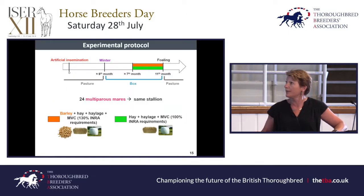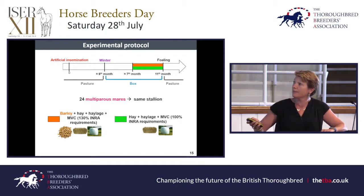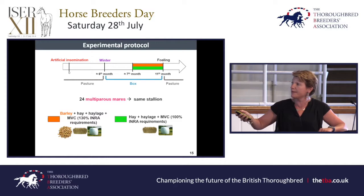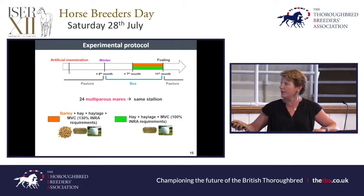This is the first experiment I want to talk about. I work with warmblood mares — we don't have thoroughbreds in our experimental herd. The animals are bred by artificial insemination and put in pasture in summer. Then at about six months of pregnancy, we had two groups: one group fed with barley — two kilos a day plus hay and haylage, reaching 130% of INRA requirements — and the other group fed only hay and haylage with vitamins, at 100% of requirements.